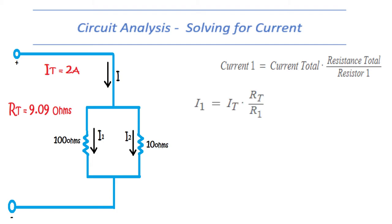After calculating the total resistance to be 9.09 ohms and knowing that the total current to be 2 amps, the formula becomes I1 equals 2 amps multiplied by 9.09 ohms divided by 100 ohms. This gives us 181.8 milliamps.